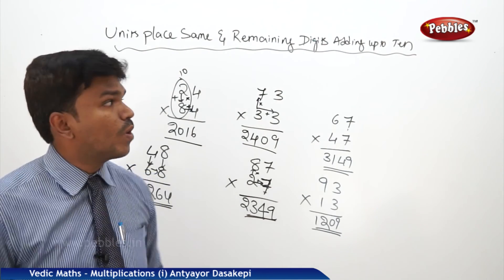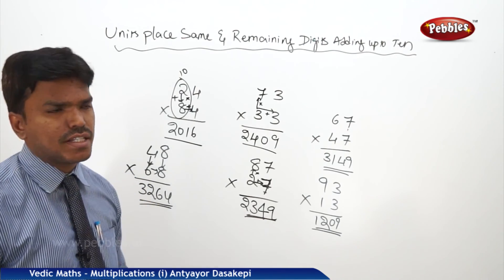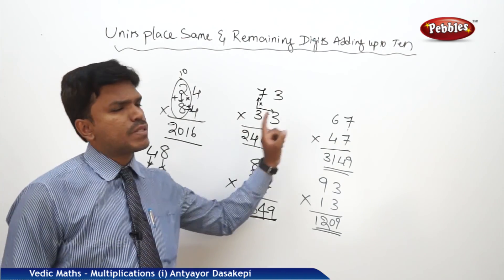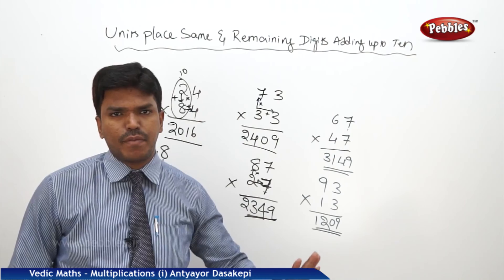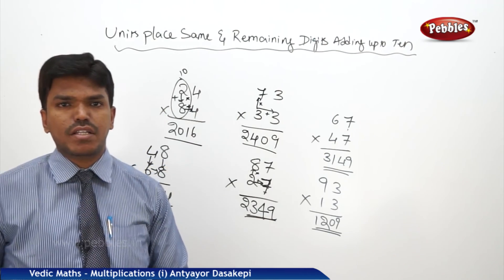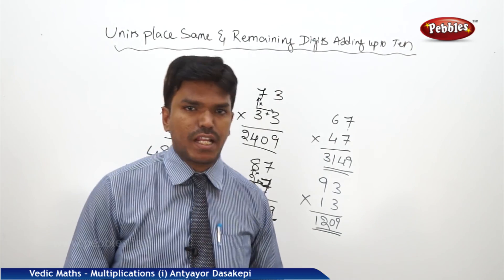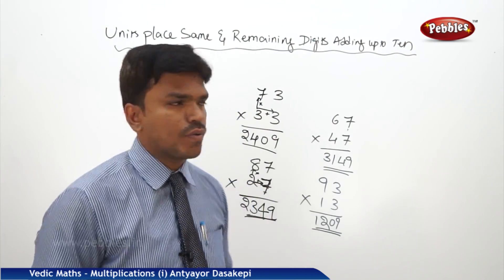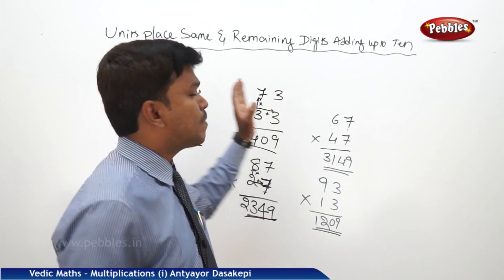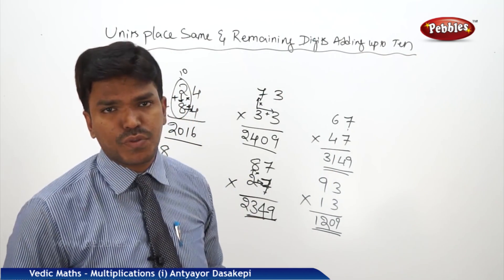Like this we can calculate any double-digit into double-digit numbers whose ones places are the same but the remaining digit places are adding to 10. This is the method: ones place same, and the remaining places adding up to 10.